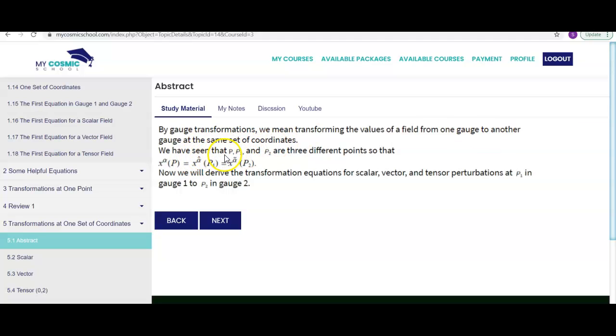We have seen that P, P1 and P2 are three different points. And these points, which we have seen in our previous videos, they are chosen so that their coordinates are the same in all the gauges. So P, P1, P2 are three points located at three different physical locations, but their coordinates are the same in each gauge.